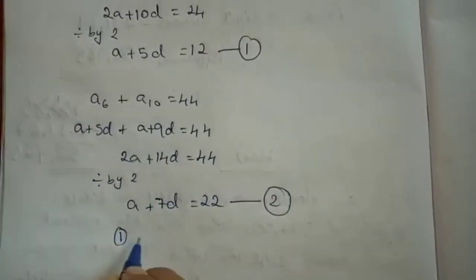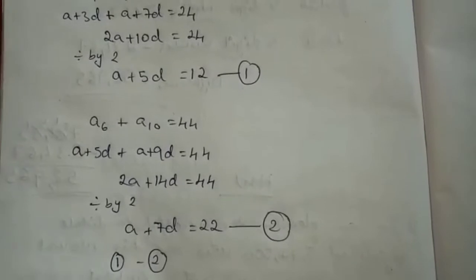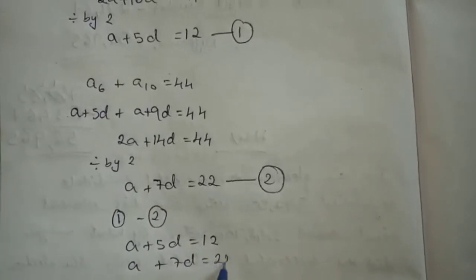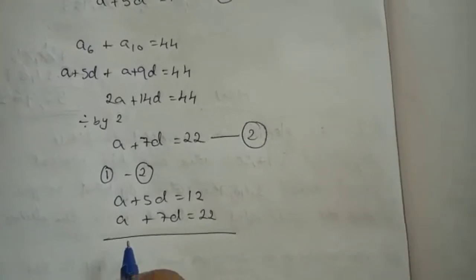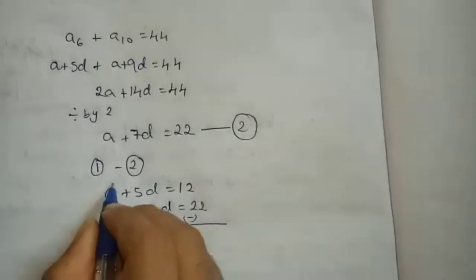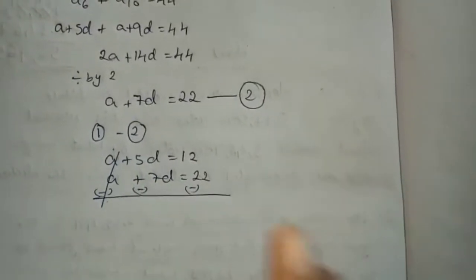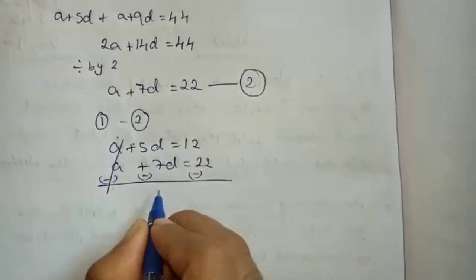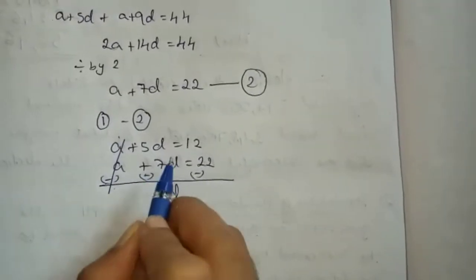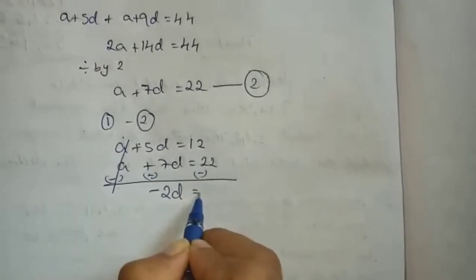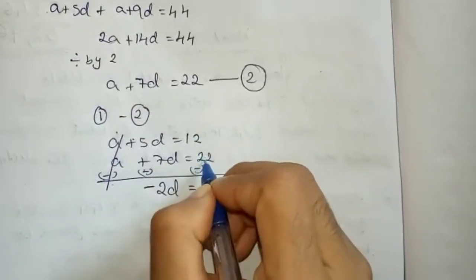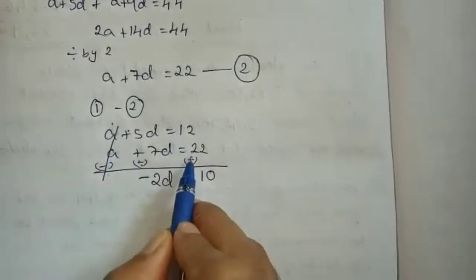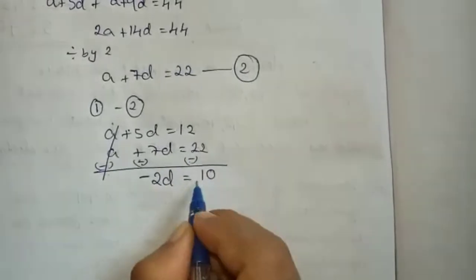Now see equation 1 and equation 2 — subtract equation 1 minus equation 2. Write equation 1: A plus 5D equals to 12. Next, A plus 7D equals to 22. Subtract — when you subtract, the sign changes. A minus A cancels. 5 minus 7: different signs, so subtract the numbers — 7 minus 5 is 2D, and the sign of the bigger number (7) gives minus 2D. Same way, 22 minus 12 is 10, and sign of bigger number (22) gives minus 10.